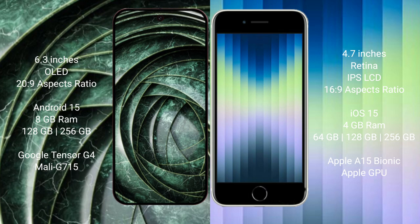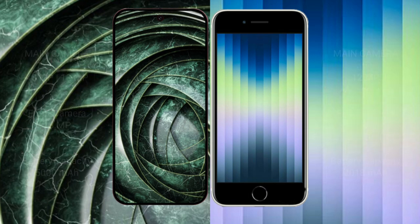The Google Pixel 9a comes with 8GB RAM and 128GB or 256GB internal storage, powered by the Google Tensor G4 processor with a Mali GPU. The iPhone AC comes with 4GB RAM and 64GB, 128GB, or 256GB internal storage, powered by the Apple A15 Bionic processor with Apple Graphics GPU.